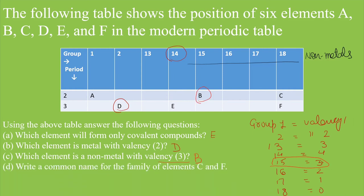Now, next is write a common name for the family of elements C and F. C and F, these two elements are present in group number 18 and their common name is noble gases, or we can say inert gases. Both are right. Their common name is noble gases and inert gases.